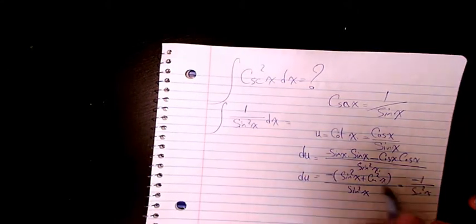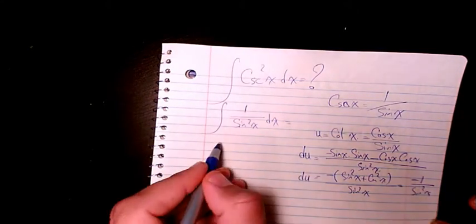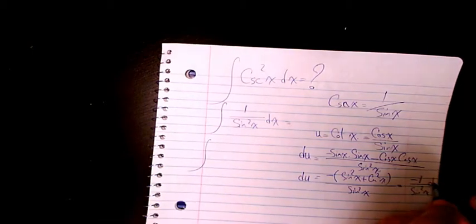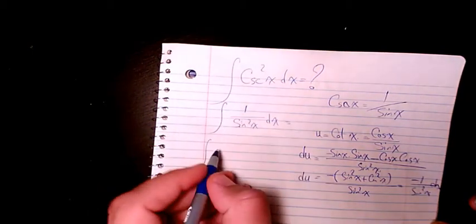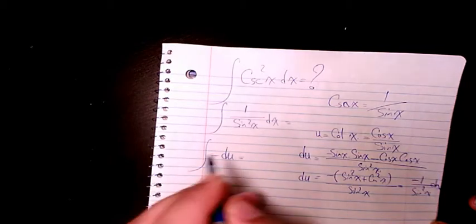So du is negative 1 over sine squared x dx. So this integral is going to change to negative du.